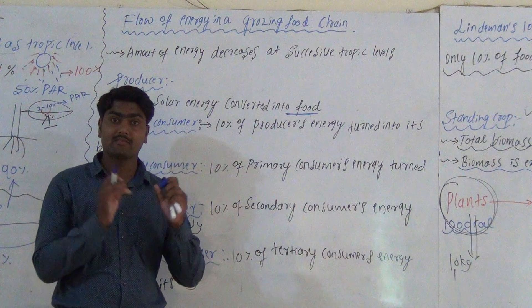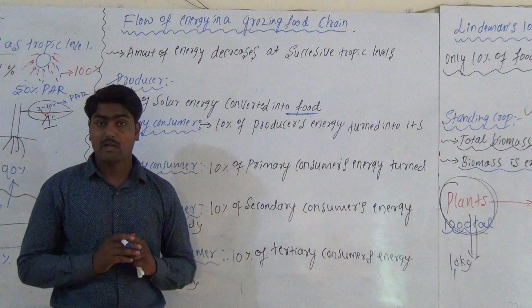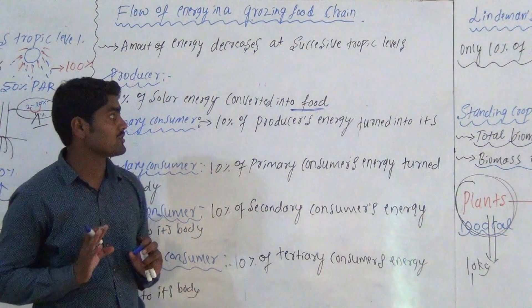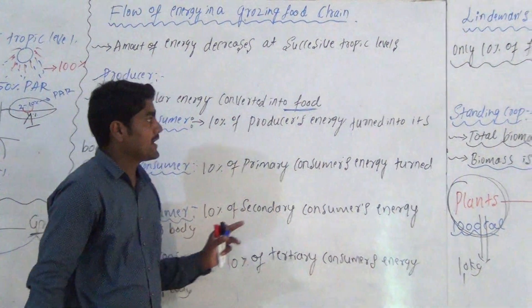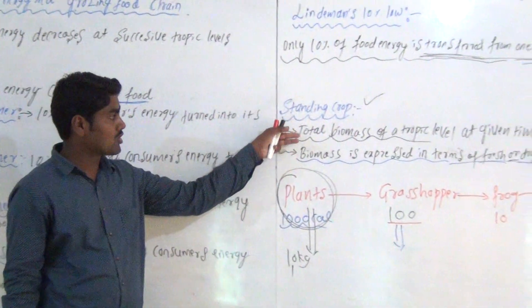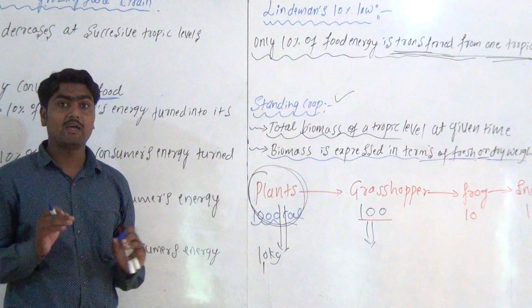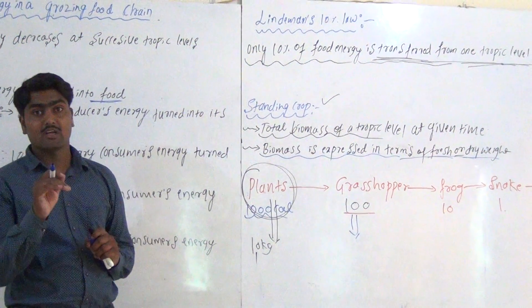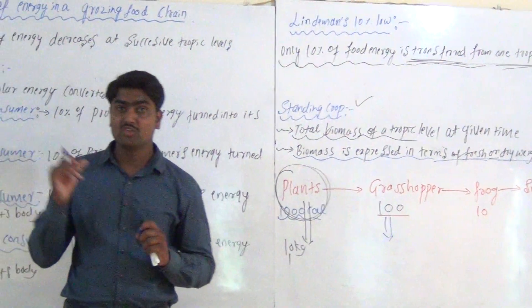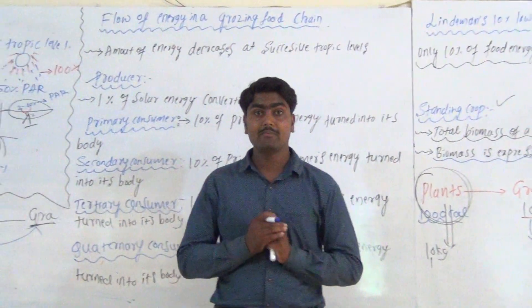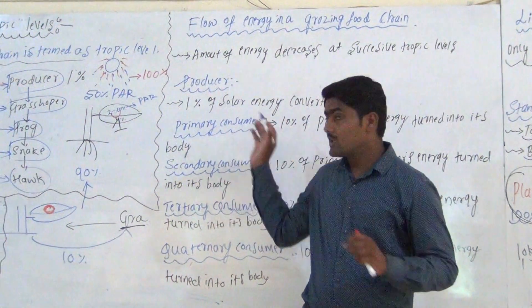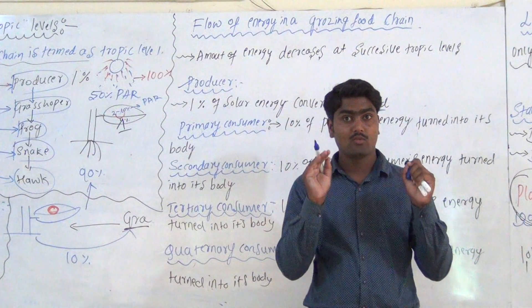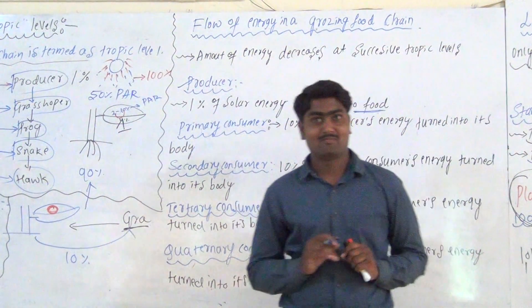In each Trophic Level, 90% of energy is lost in the form of heat. Next, Standing Crop is the total biomass of a Trophic Level at a given time. If you don't understand in this video, watch it one more time and write all these points. Study well. Thank you.